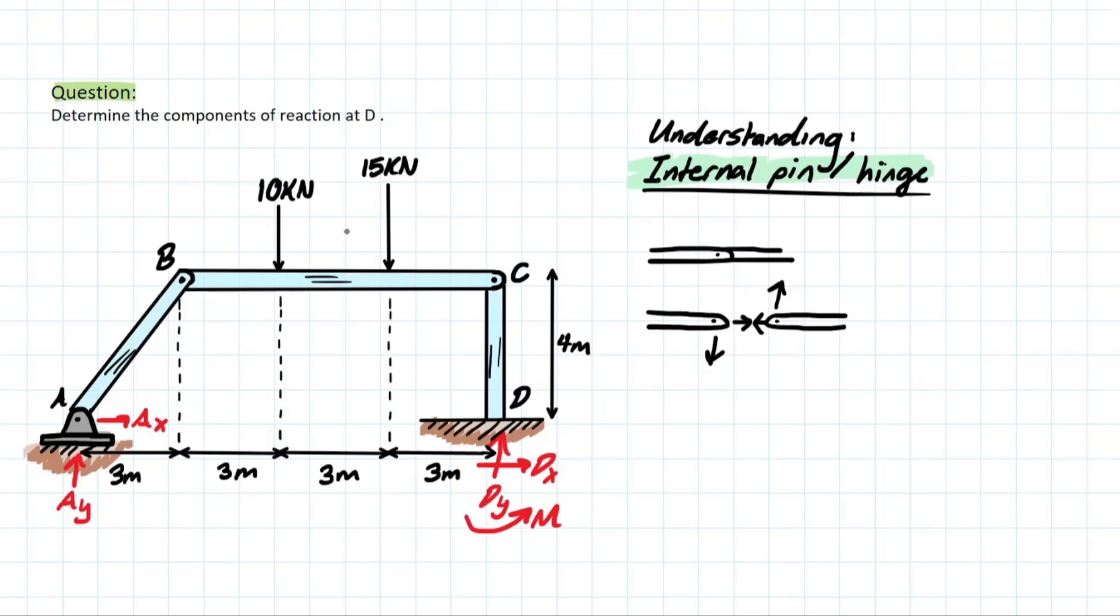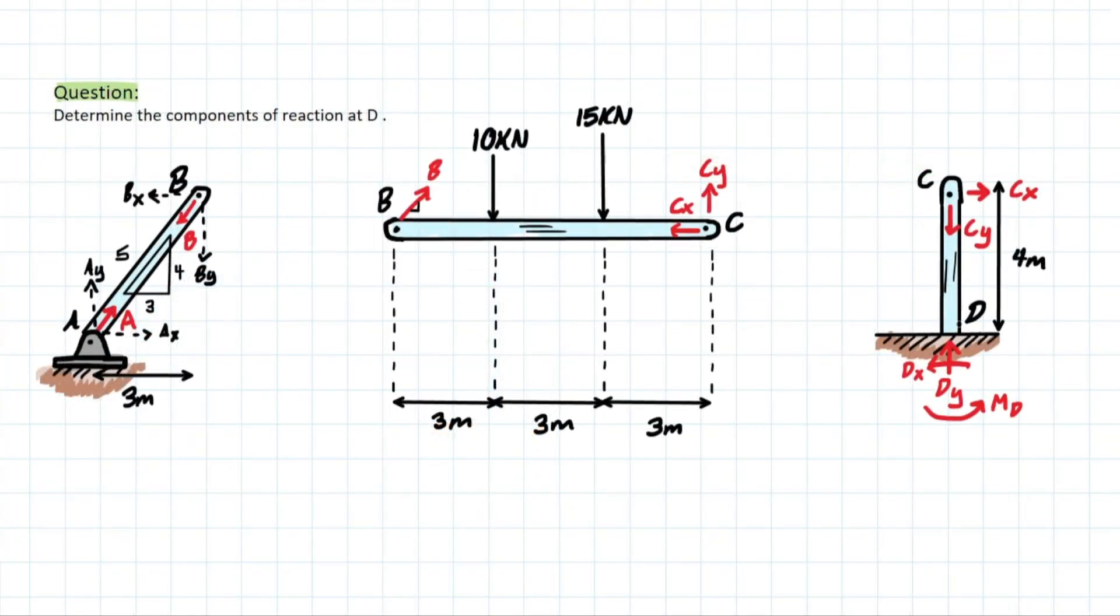So let's actually separate this frame here and see what it looks like when we have all of our three members separated at the pins. Okay, so now that we have everything separated based on where our pins were in the problem, we can see now that member CD can be analyzed in the future if we solve for C-Y, the reactions at that pin, which are going to be the same reactions in this member BC, which can be solved for if we find out what B is. So in summary, we can actually find the reaction at D if we first solve this member and then move to CD.